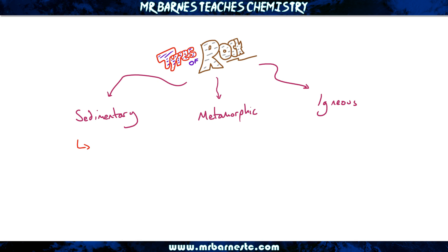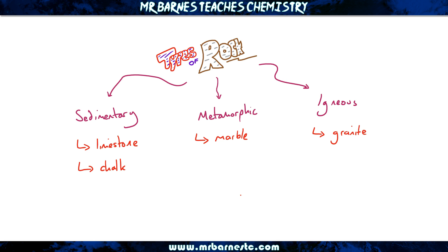What you need to be able to do first of all is know some examples. So the main examples of sedimentary rock are limestone and chalk. Metamorphic — the main one you need to know is marble, and igneous is granite. So the question is, how did limestone become limestone? How did marble become marble and how did granite become granite?